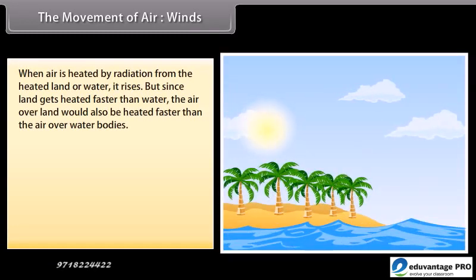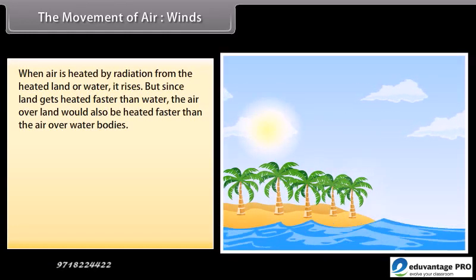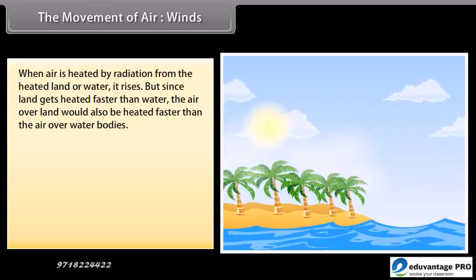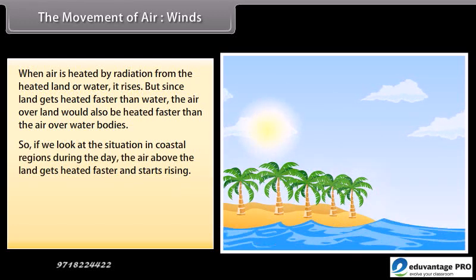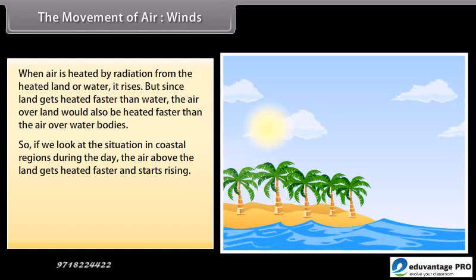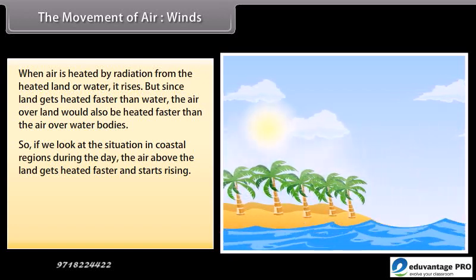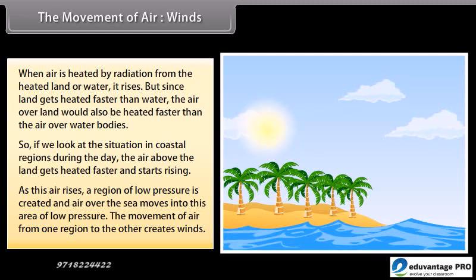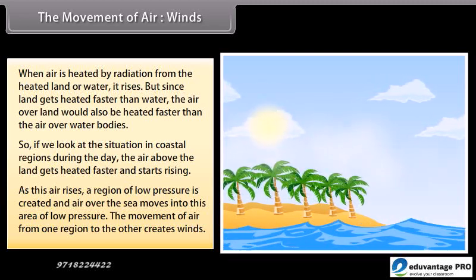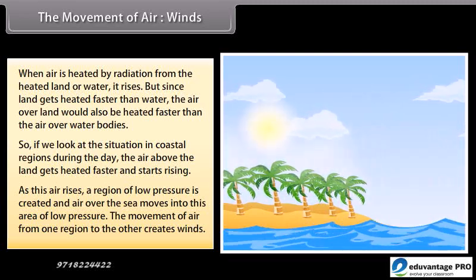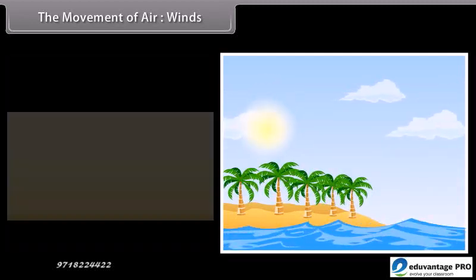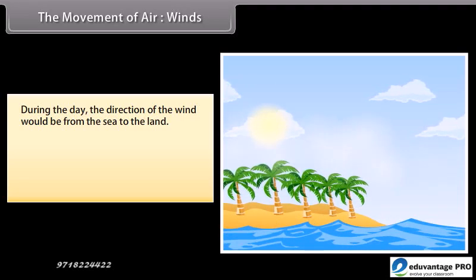When air is heated by radiation from heated land or water, it rises. Since land gets heated faster than water, the air over land is heated faster than the air over water bodies. In coastal regions during the day, the air above the land gets heated faster and starts rising. As this air rises, a region of low pressure is created and air over the sea moves into this area of low pressure. The movement of air from one region to another creates winds. During the day, the direction of wind is from the sea to the land.